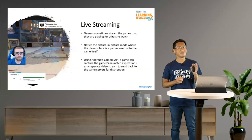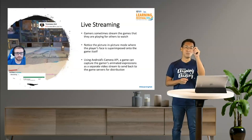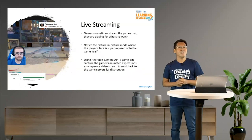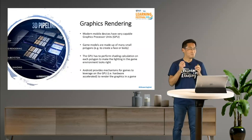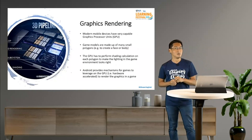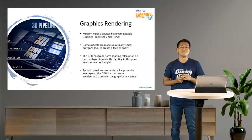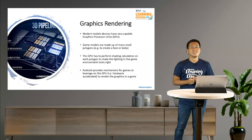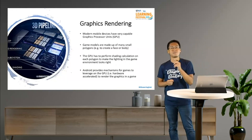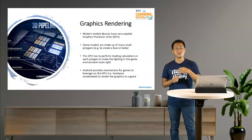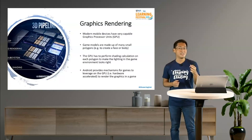Gamers sometimes stream their games for others to watch. Notice the picture-in-picture mode where the player's face is superimposed on the game itself. The game can use Android's Camera API to capture the gamer's face and send it as a separate video stream back to the game server. Modern mobile devices have very capable GPUs. Game models — those little characters running in games — are made of many small polygons, or little triangles, used to create the face, arms, and body. The GPU performs shading calculations on each polygon. Android provides mechanisms for games to leverage the GPU for hardware-accelerated graphics rendering.